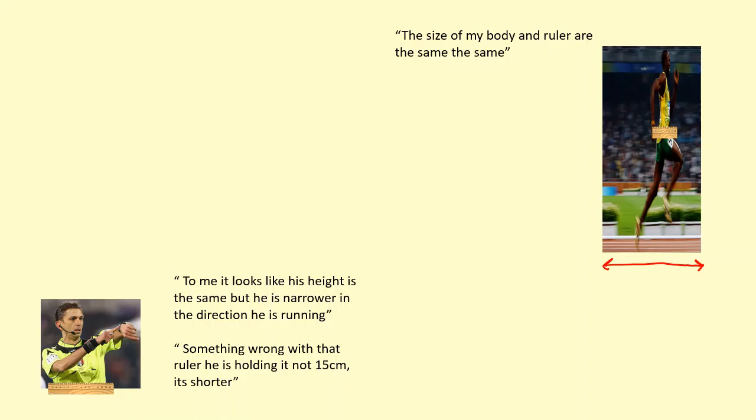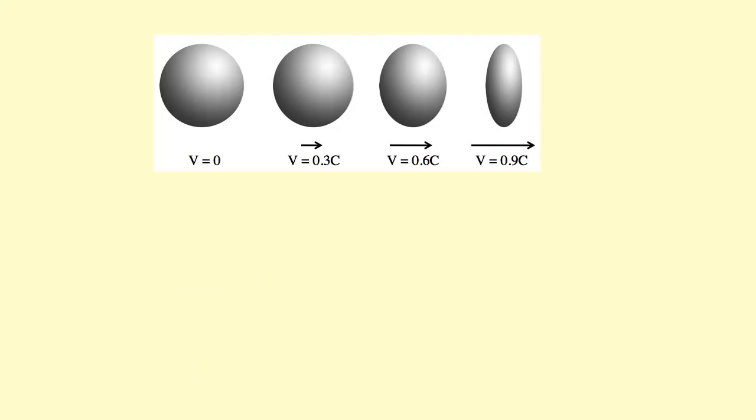But to him, he notices that the track is going past him and is shorter. So from his perspective, of course, the track and the lineman and everyone is moving past him, so to him they look contracted. This is called length contraction.